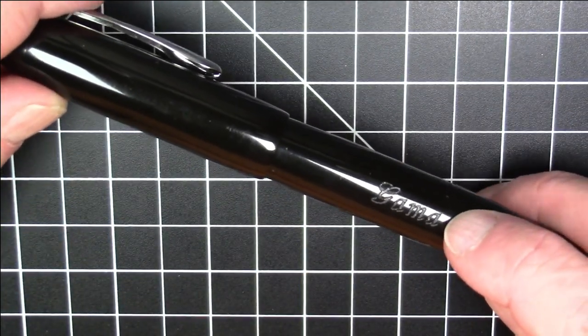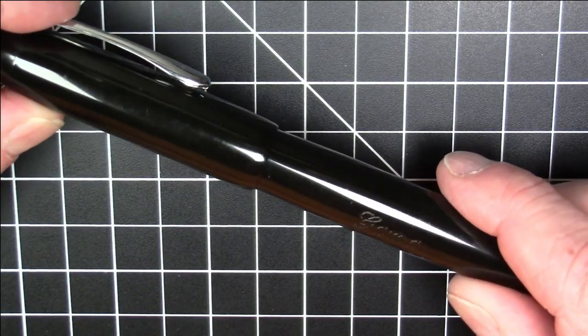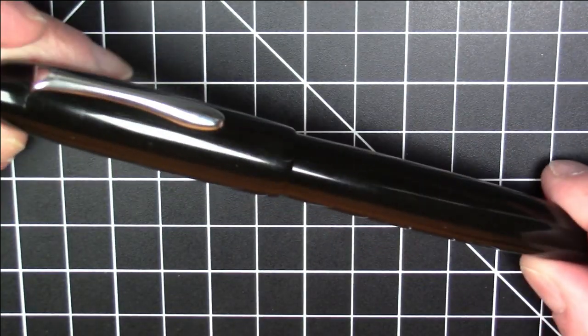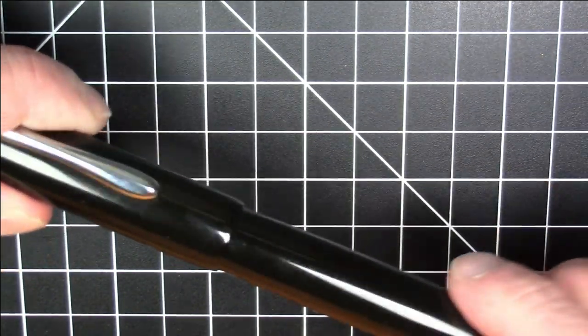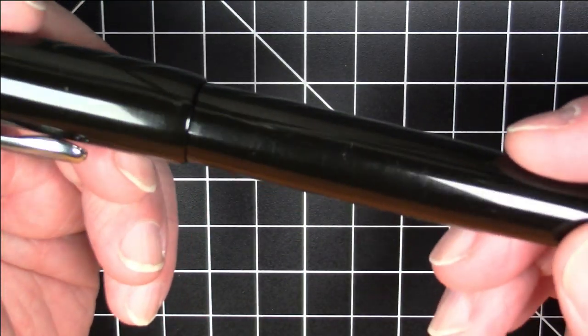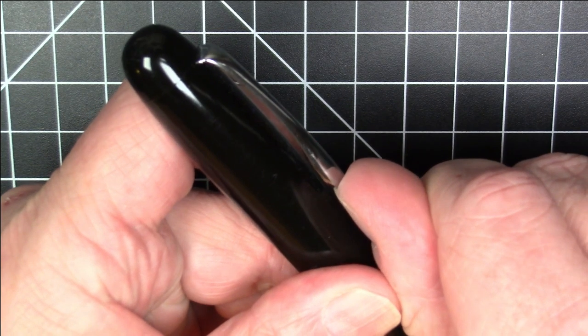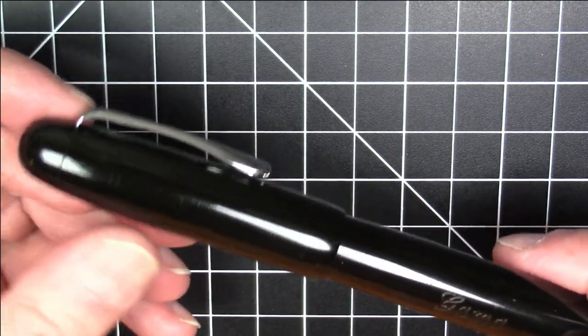Very simple pen. The only branding on it is the word Gamma etched into the side of the ebonite here. No cap bands, no finials, no anything like that. Everything just comes to a rounded point and it is nicely polished, solid black ebonite material with a very nice functional, simple clip.